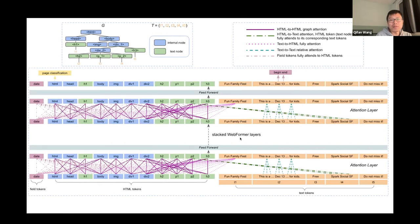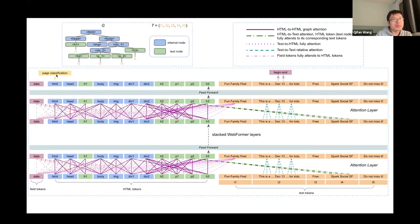We have stacked Webformer layers — we use 12 layers, 6 layers, or more layers with different configurations. After the final layer, we have output embeddings for all these tokens. We can then build the output layer — for example, using the root HTML token embedding to build page classification, such as whether this is a shopping page, product page, or event page. We also use a span-based extraction layer to get the begin and end for each field token. For example, 'December' would be the begin token for the date field, and '13' would be the end token, so 'December 13' would be the extracted date.